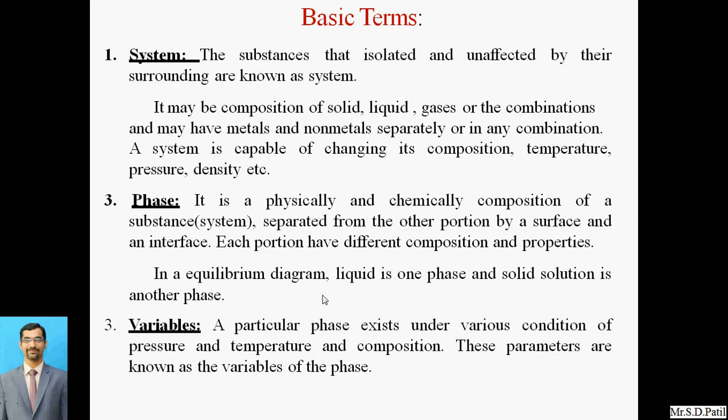A system may be a composition of solid, liquid, gases, or combinations, and may have metals and non-metals separately or in any combination. A system is capable of changing its composition, temperature, pressure, density, etc. So a system can change anything — its composition, temperature, pressure, and density. This is the meaning of system.